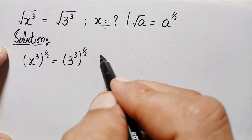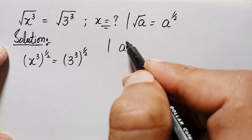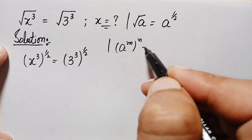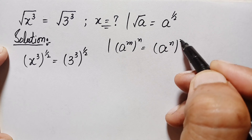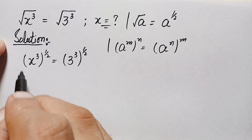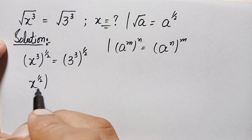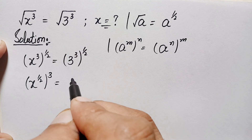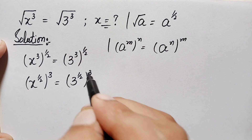On both sides we will use an exponential identity. The identity states that a raised to power n, whole raised to power m, can be rewritten by multiplying the exponents. Using this identity, both sides become: x raised to the power 1/2, whole cubed, is equal to 3 raised to the power 1/2, whole cubed.